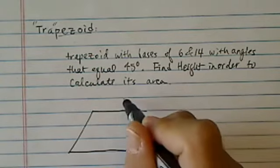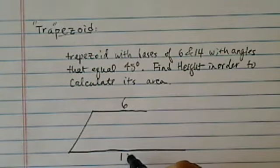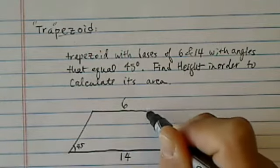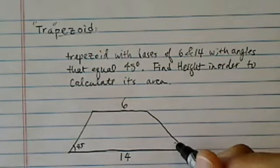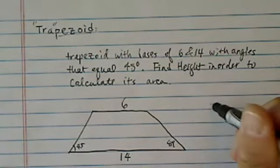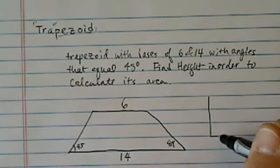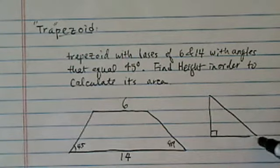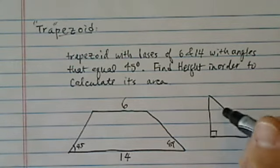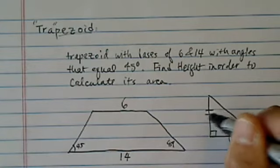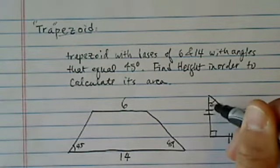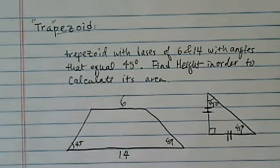We're given a trapezoid with bases of 6 and 14 with angles that equal 45 degrees. There's quite a significance with this 45-degree angle. 45 is one of the nicest right triangles in that when you have a 45-degree angle, the two short legs are identical. Think of them as twins. So here's 45, and then this has to be 45 degrees as well.